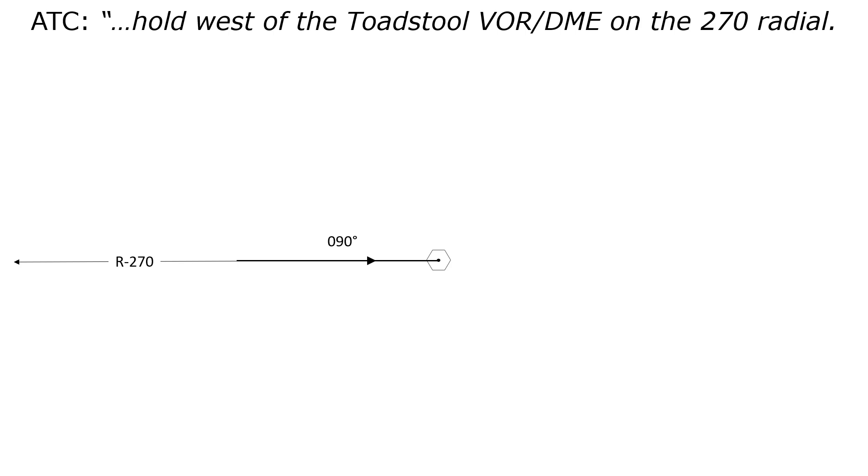Notice the language, hold west on the 270 radial. When using a NAVAID like a VOR, there's always an agreement between the cardinal direction mentioned, west in this case, and the radial. 270 degrees and west are the same thing. You won't hear, for example, hold west on the 090 radial. Also, visually, you can already see that the holding pattern will be to the west of the holding fix, also matching up with the instruction.